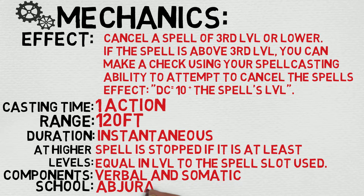On a basic level, it cancels a spell of third level or lower. If the spell is above third level, you can make an ability check using your spellcasting ability to attempt to cancel the spell's effect — the DC is 10 plus the spell's level. The cast time is one action, the range is an impressive 120 feet, and the duration is instantaneous. At higher levels, the spell is stopped if it is equal in level to the spell slot used. Components are verbal and somatic, and the school is Abjuration.